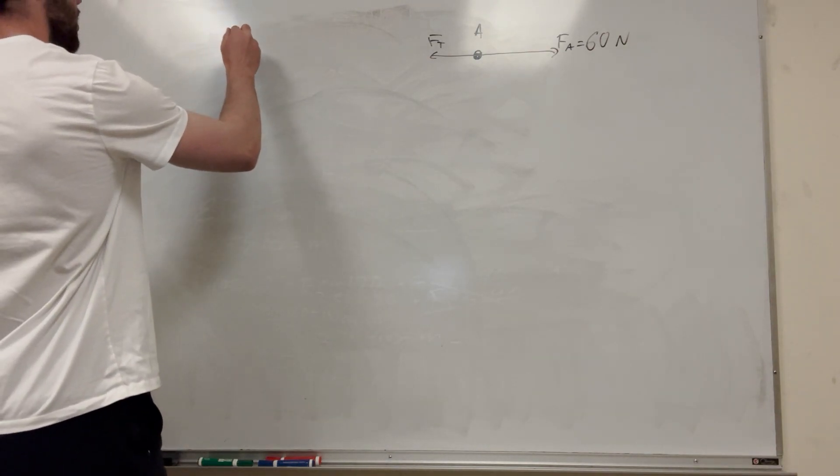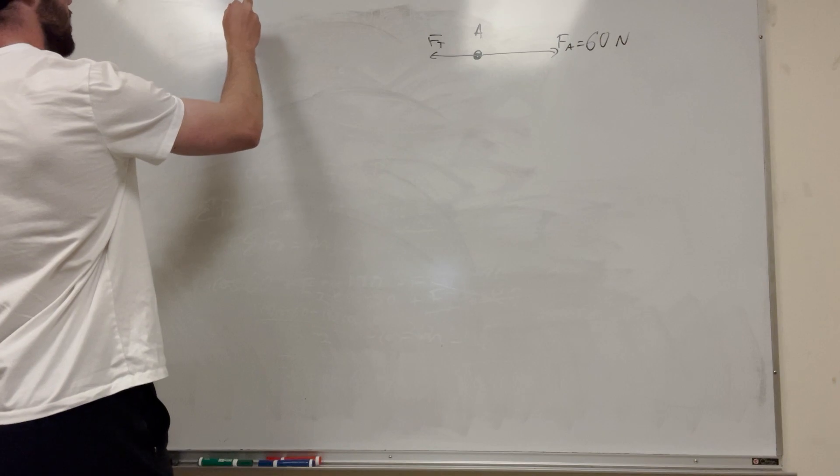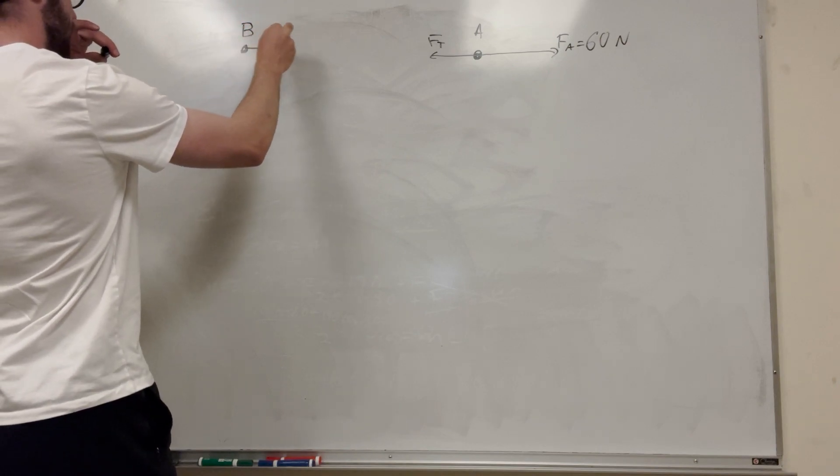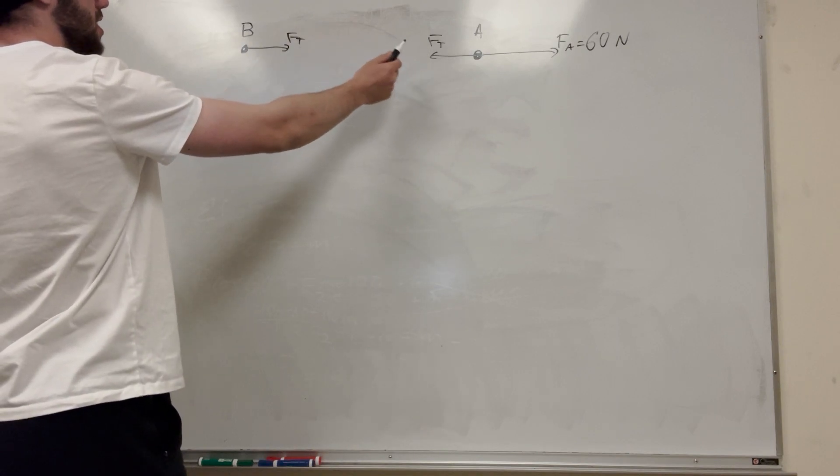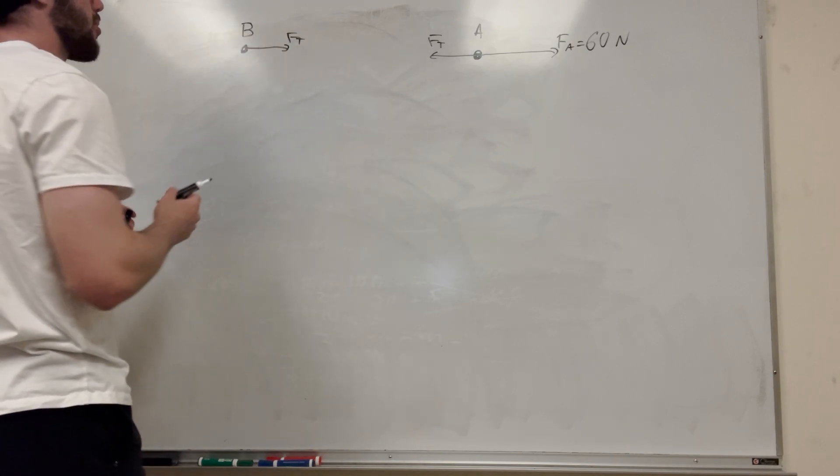And then for block B, I guess we can do that too while we're at it. So all we're gonna have on block B is the force of tension pulling it the same, and this is gonna be the same tension force as this one, just pulling it forward instead of backwards.